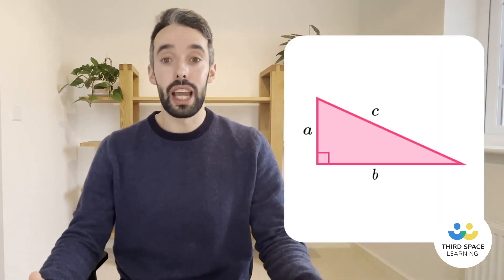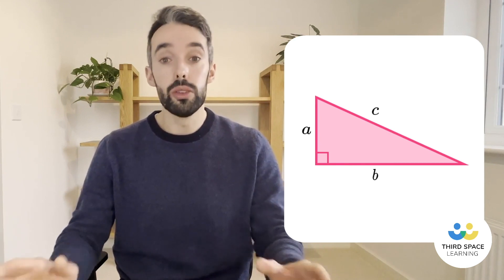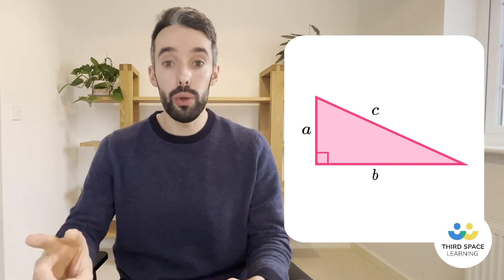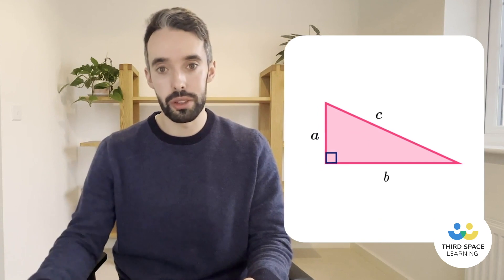Okay, let's look at Pythagoras' theorem. Grab a pen and let's dive in. Pythagoras' theorem is used to work out the side lengths of right-angled triangles. In order to use it we need to know two of the three lengths of the triangle and it has to be a right-angled triangle.